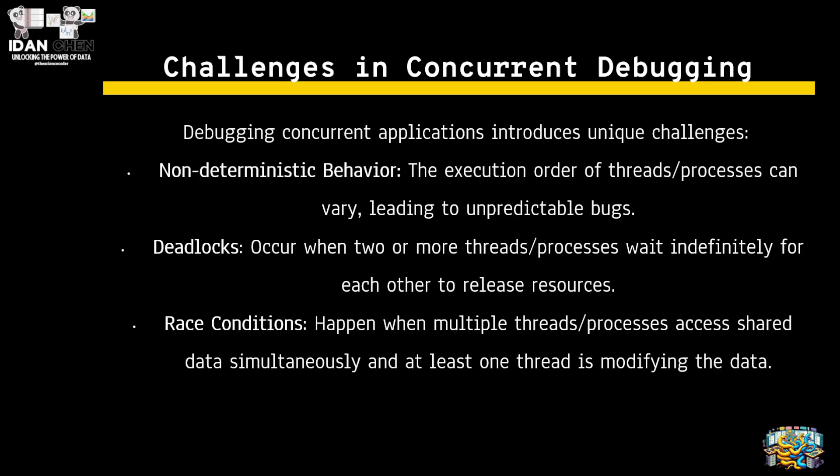What are the challenges in concurrent debugging? Non-deterministic behavior: the execution order of threads can vary, leading to unpredictable bugs. You can run your code and it works fine, and the second time it will crash. It's very unpredictable.